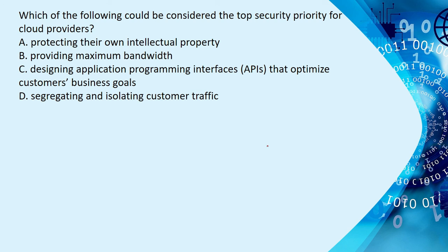Next question: 'Which of the following could be considered the top security priority for cloud providers?' Options include protecting their own IP, providing maximum bandwidth, designing application APIs that optimize customer business goals, or segregating and isolating customer traffic. The correct answer is segregating and isolating customer traffic, because in a multi-tenant environment it is essential that customers cannot see each other's traffic.